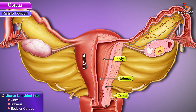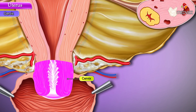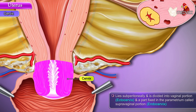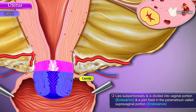The cervix, or neck, measures about 2.5 to 3 centimeters in length. It lies subperitoneally and is divided into the vaginal portion, also known as the ectocervix, and a part fixed in the parametrium called the supravaginal portion or the endocervix.